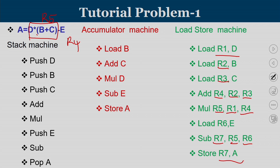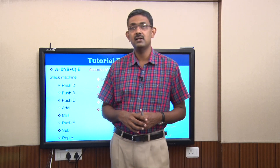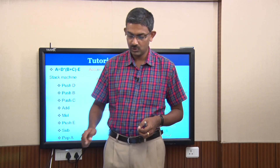Given the same expression A = D * (B + C) - E, the code generated by the compiler is different for each architecture because the hardware understands a different instruction language. This problem gives a deeper understanding of how a stack architecture, accumulator architecture, and load-store architecture each work.